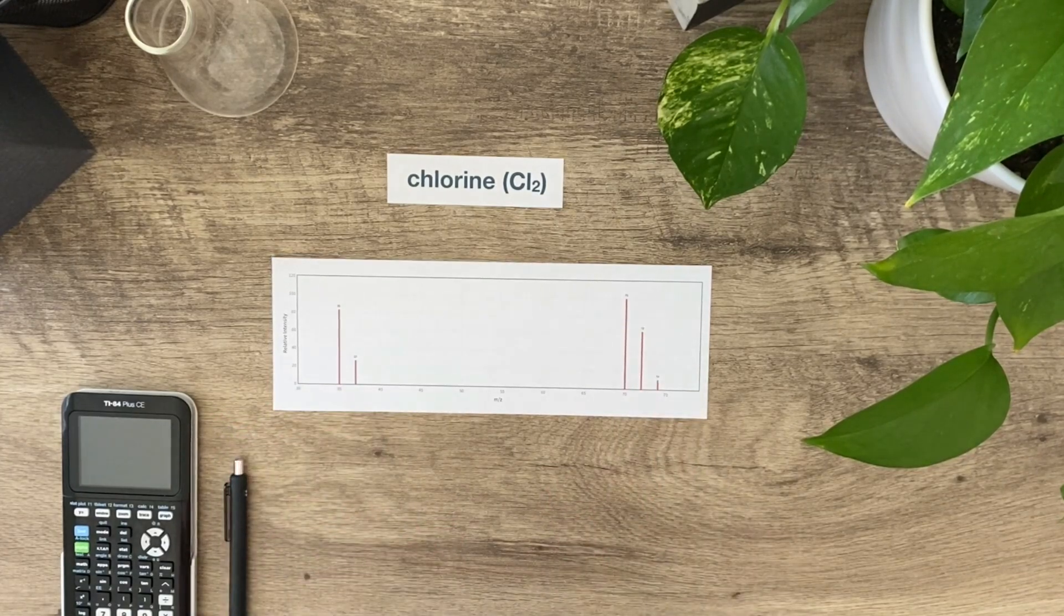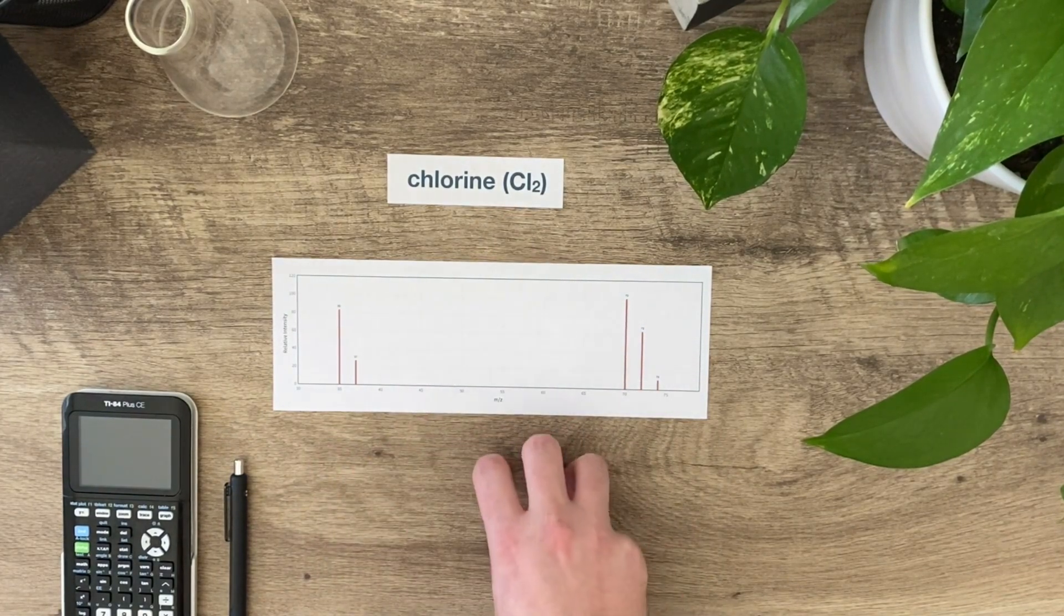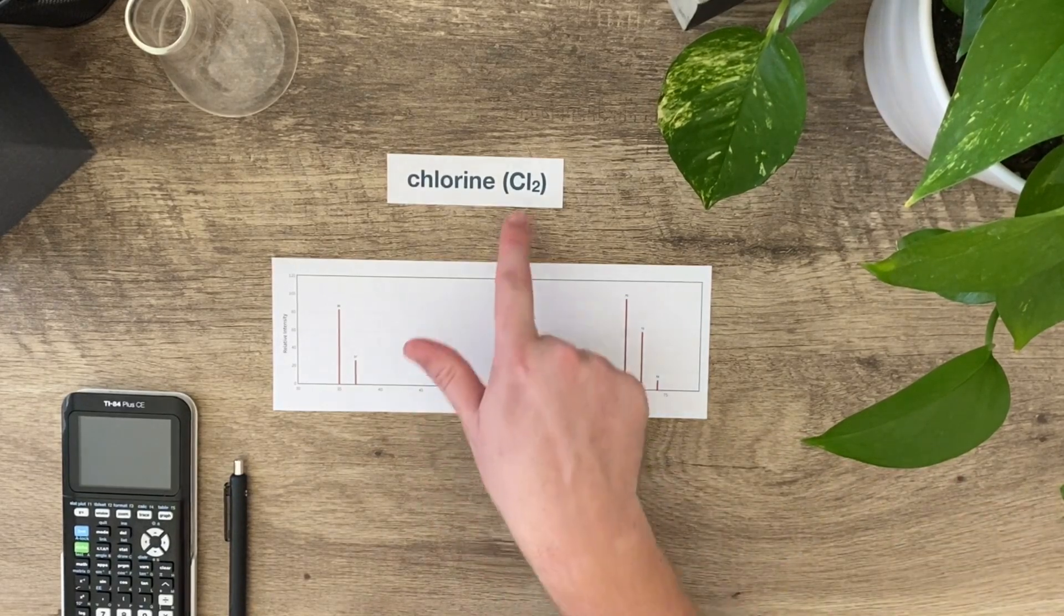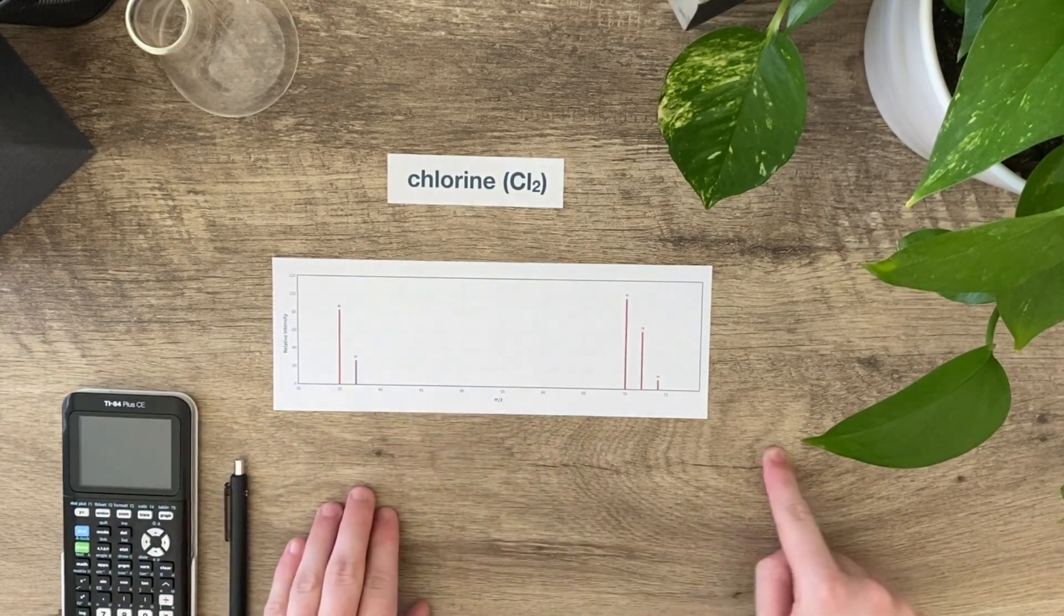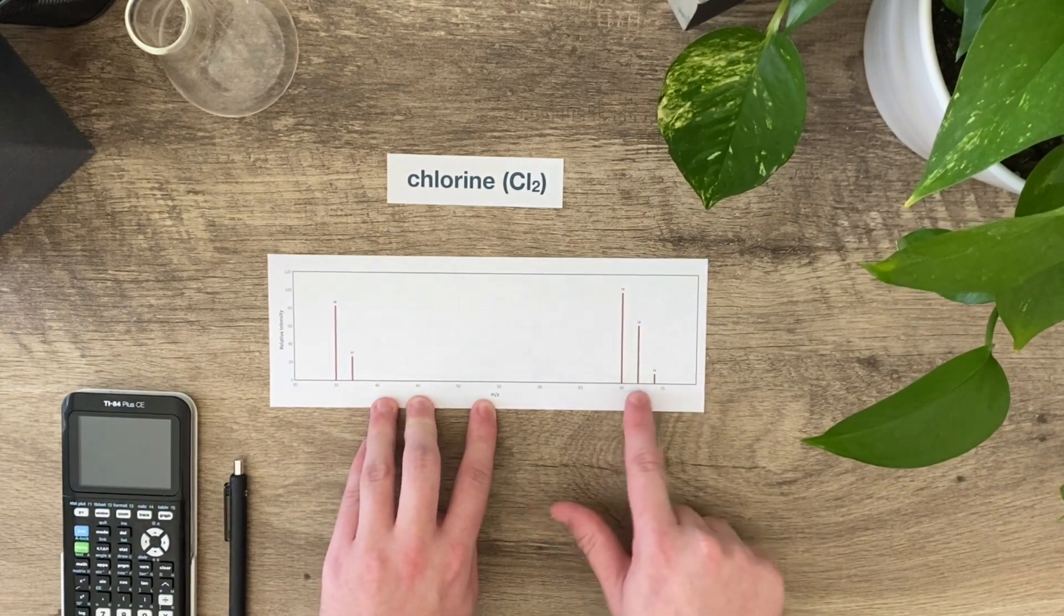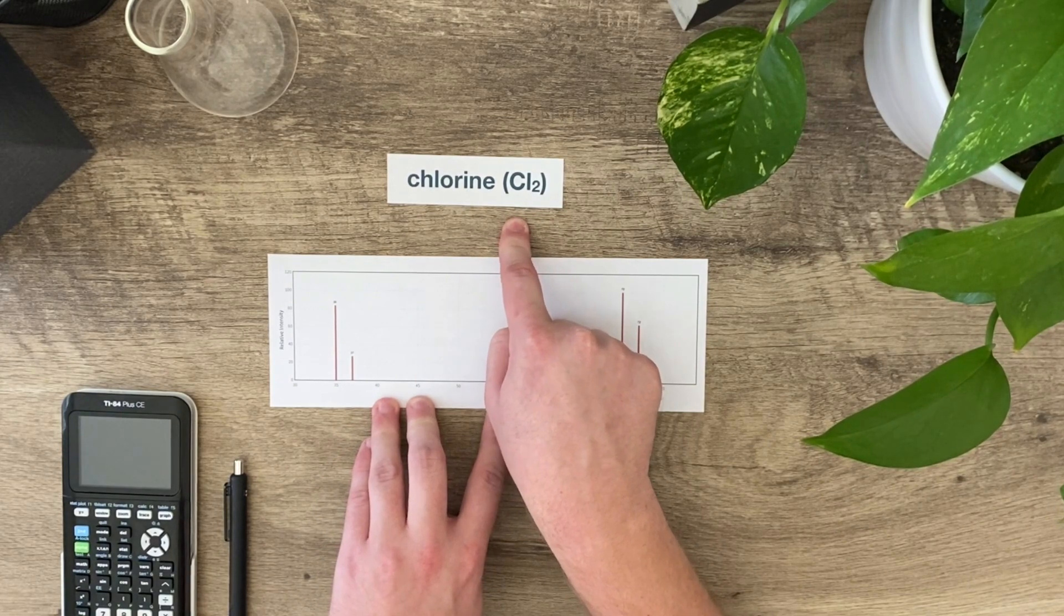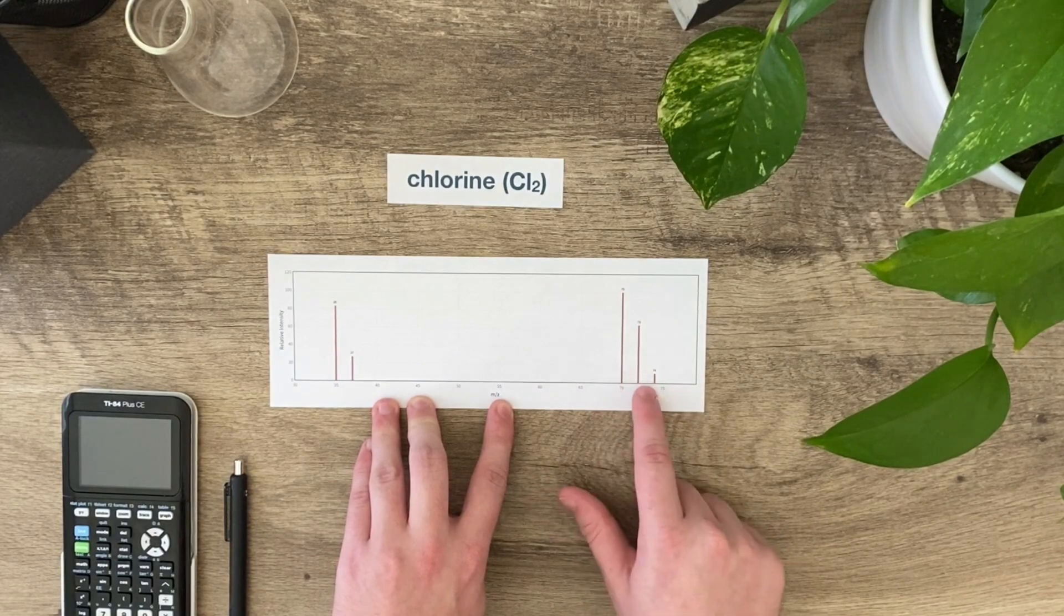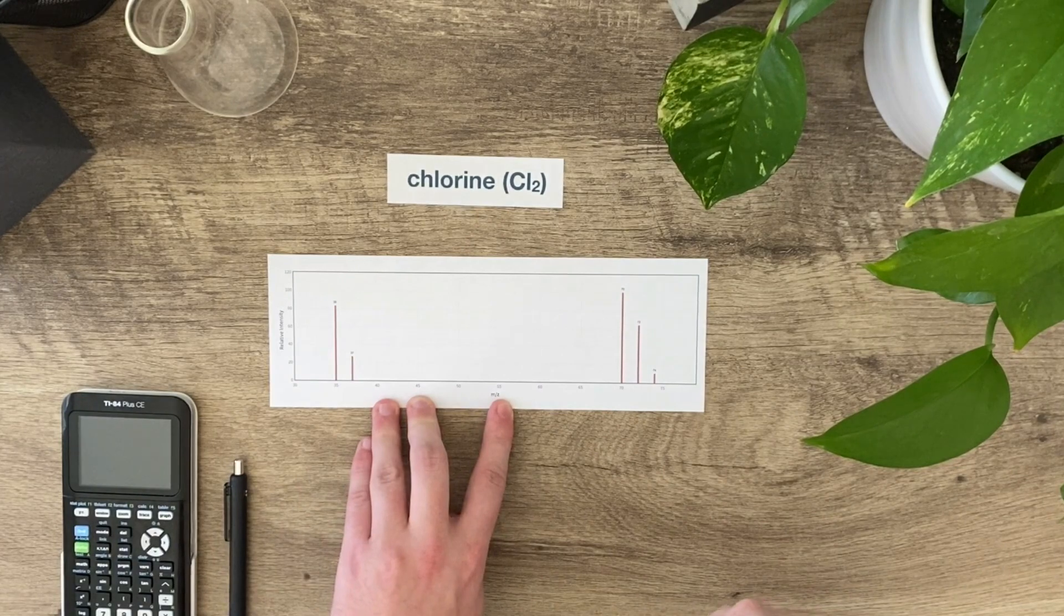These peaks are relating to the molecule. The molecule goes through ionization, it becomes charged, it moves through the magnetic field, and then it hits a sensor. This is a molecule, so when it becomes charged, sometimes it'll stay together as Cl2 the entire time. If it does, that's where these peaks are coming from: 70, 72, 74. Chlorine's average atomic mass is roughly 35.5, which is why we see peaks around 70, 72, and 74. That's the molecule staying together, so it didn't get separated during ionization.